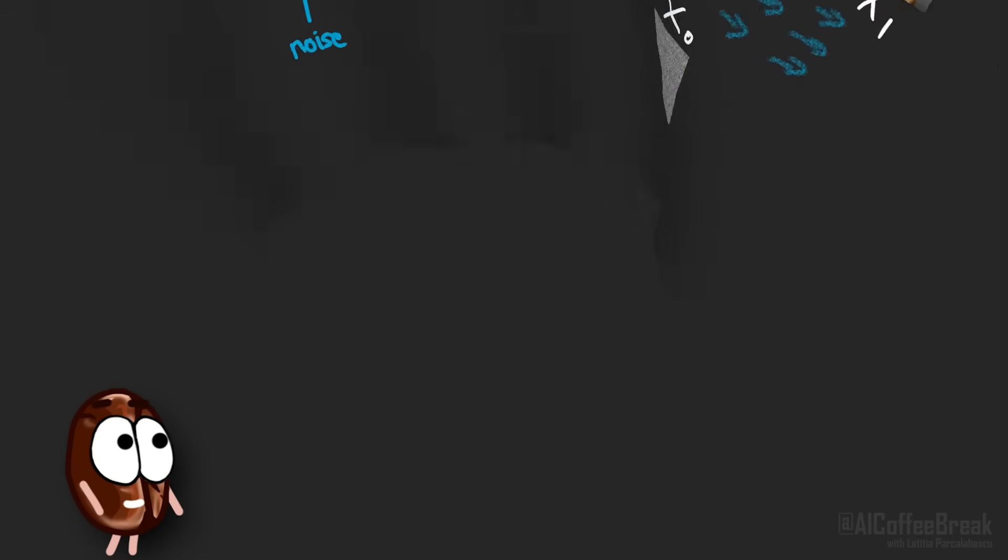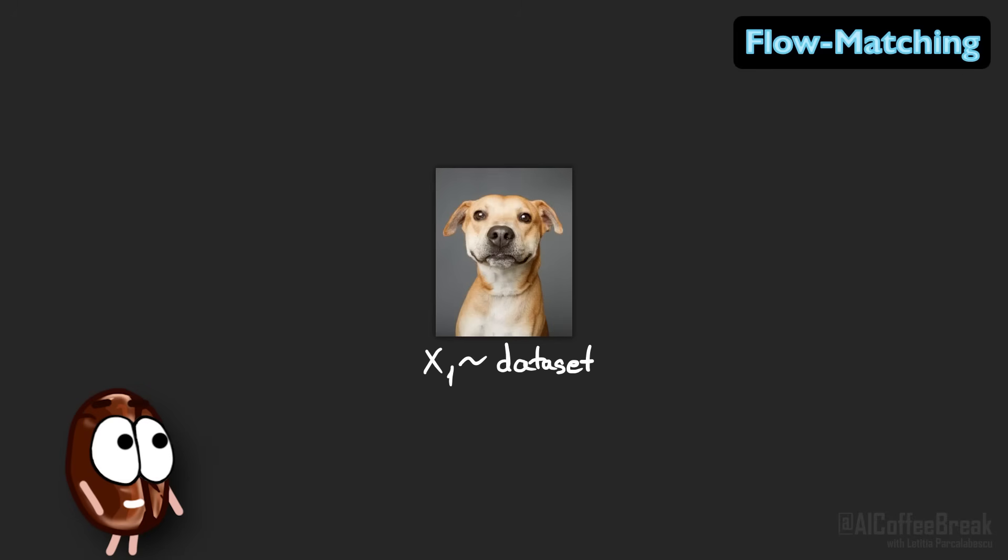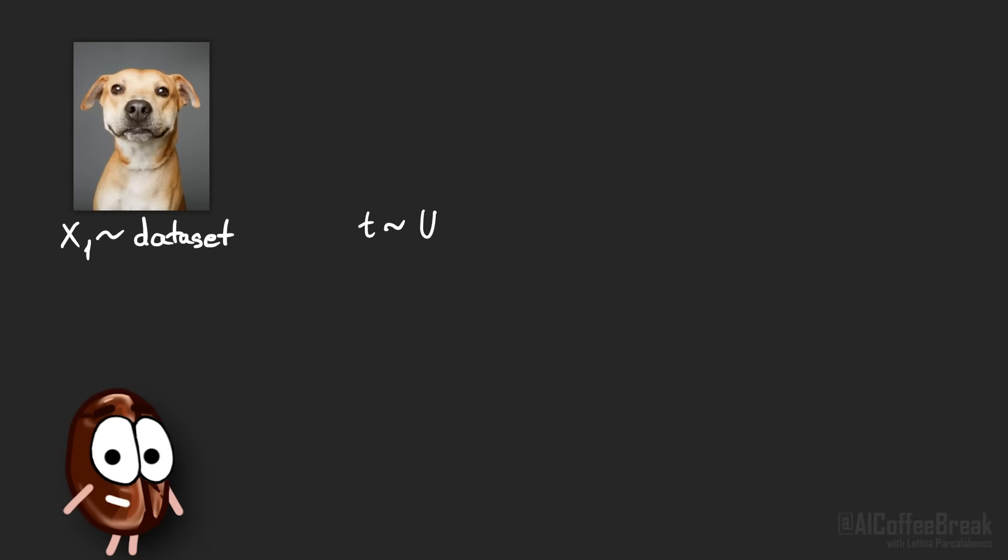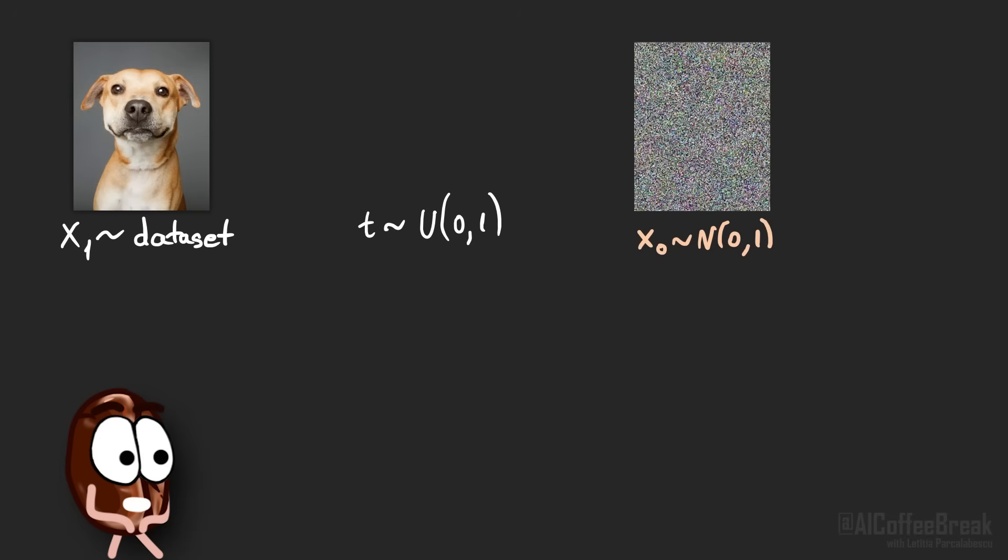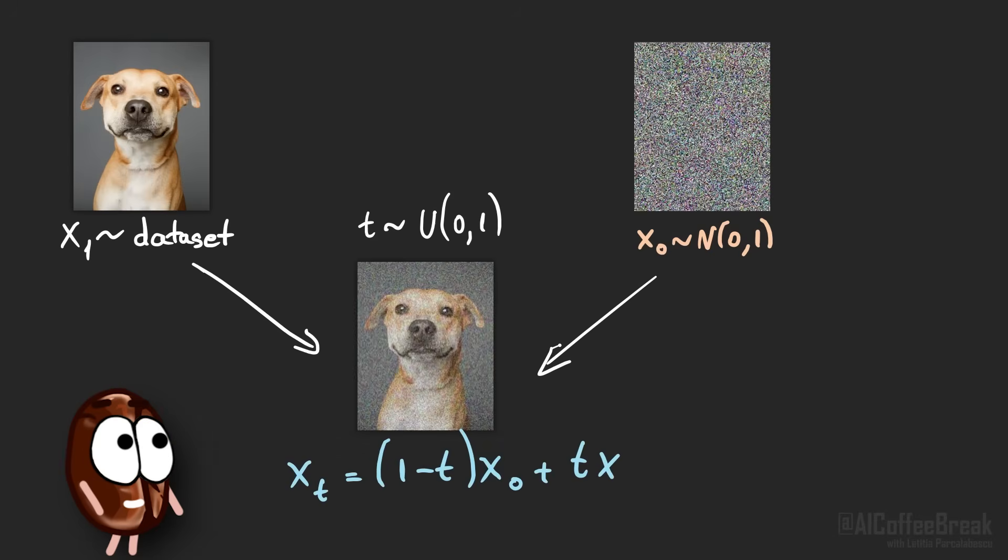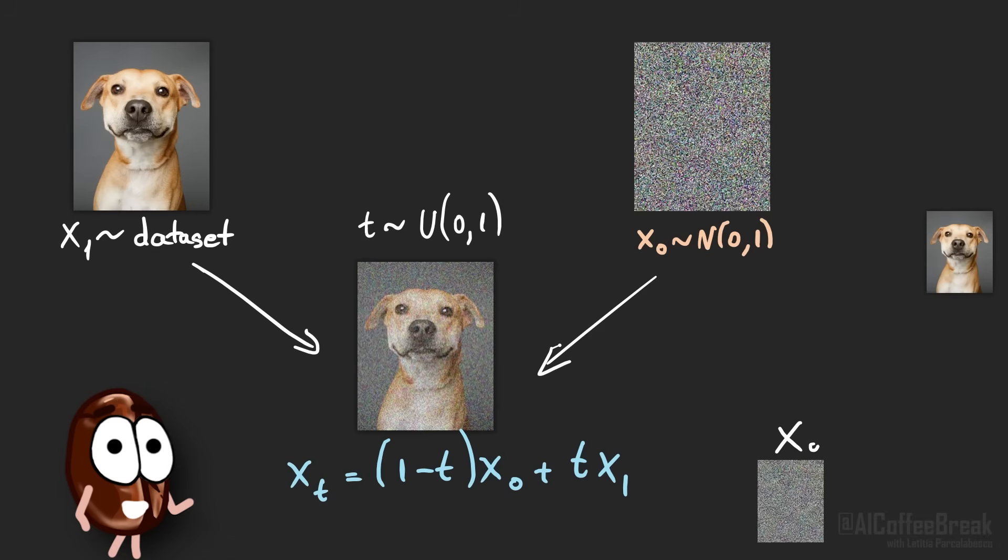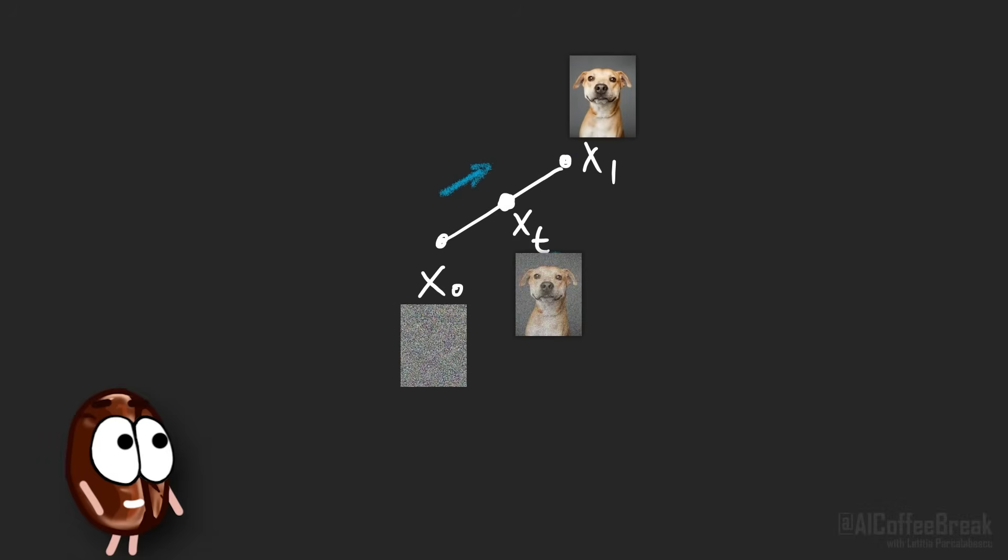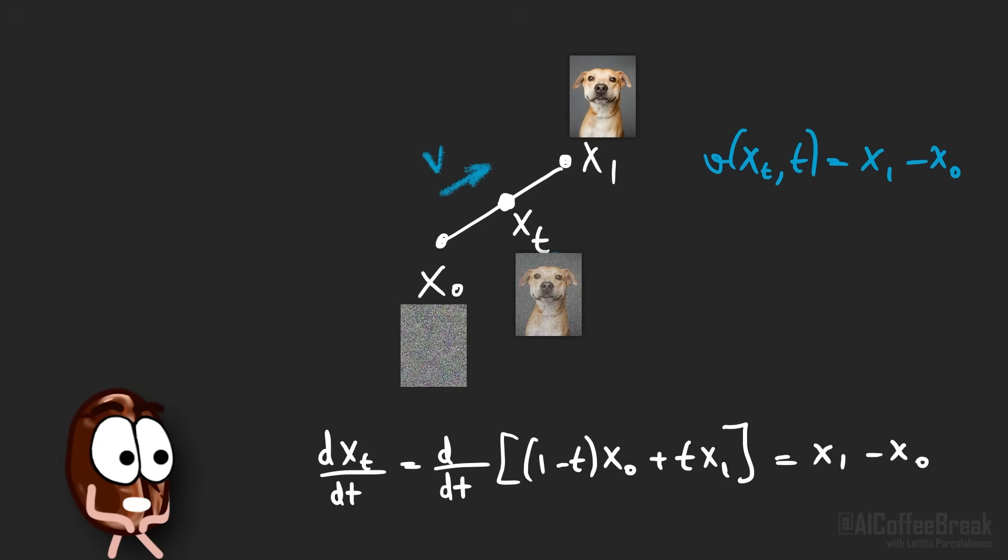Like for diffusion models, we take x1, a data point from our image database we use for training. Then again, we sample a time step t between 0 and 1. But now it gets much simpler. We also sample x0, which is just an image with complete noise of the same size as x1. Then from x1, x0 and t, we generate xt, which is just a linear interpolation of x1 and x0. Linear interpolation, which we also visualize here again on the right. We can compute a ground truth velocity field just by subtracting x0 from x1. By computing the derivative of xt with respect to t, we can see that this constant velocity field is the right one for our linearly interpolated xt.